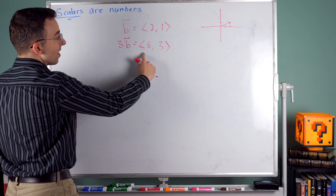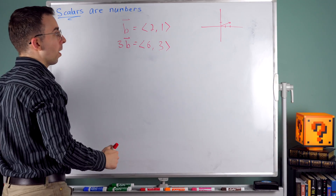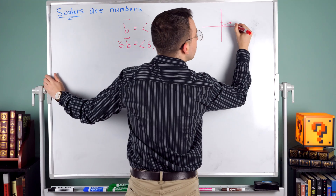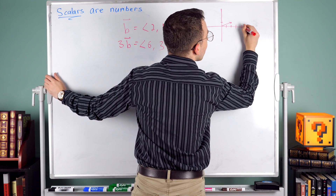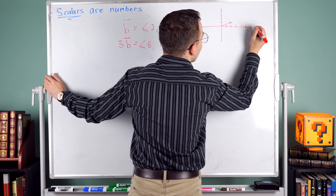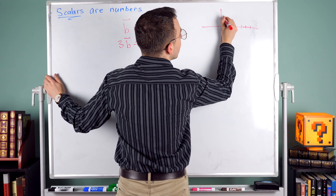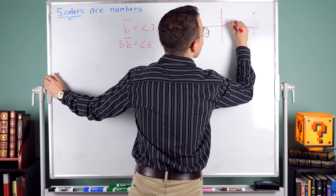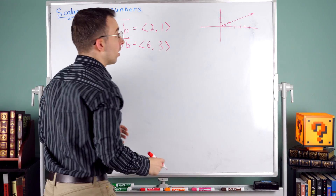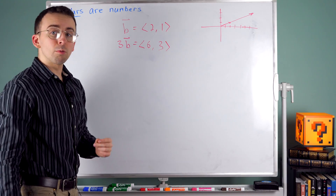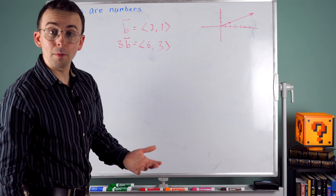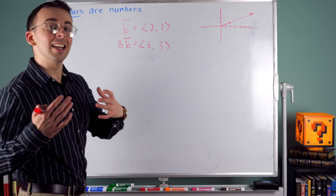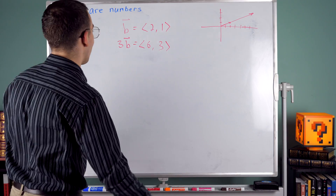Let's put this vector (6, 3) on the graph. So that vector looks something like that — it goes in the same direction as the original vector B, but it's three times as long. And that's how this scalar stuff works.